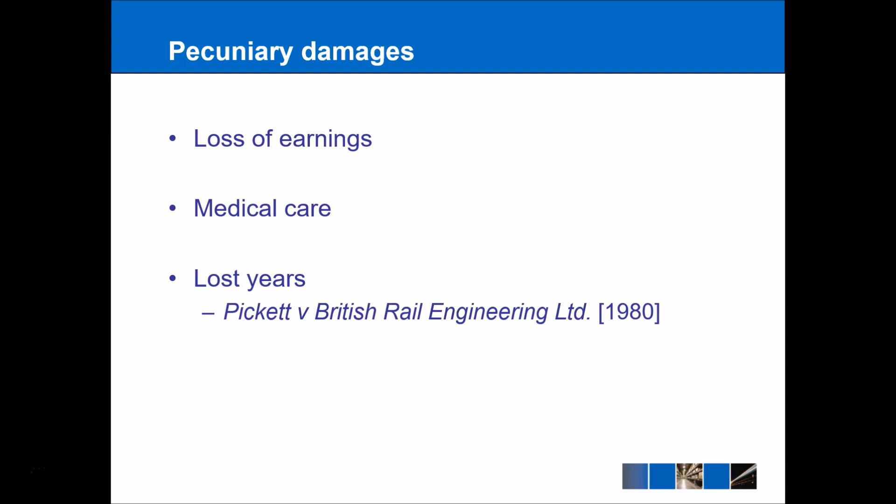In terms of working out damages, especially for compensatory damages, we can split these into pecuniary and non-pecuniary. Pecuniary just means that it can be quantified — we can work out an actual financial figure for how much damages should be paid. For example, loss of earnings is something that you can work out. If you earn £500 a week and you're going to lose earnings for six months, then it's easy to work out how much you will lose as a result of this tort, so that's called pecuniary damages.